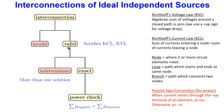An interconnection is valid only if it satisfies both KCL and KVL. An interconnection, though valid, may lead to an indeterminate solution. Recall from basic maths that undefined means a solution does not exist. However, indeterminate means that there is no unique solution and in fact there may be infinitely many solutions. For interconnections that are valid and have an exact solution, we can apply a power check to show that the sum of power supplied or generated in the circuit is equal to the sum of power absorbed in that circuit.